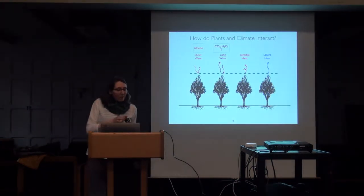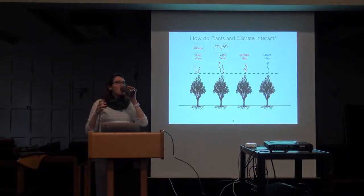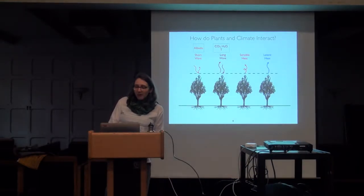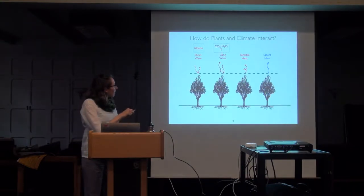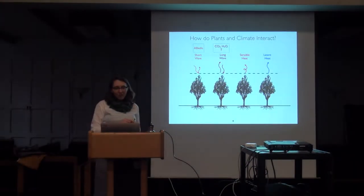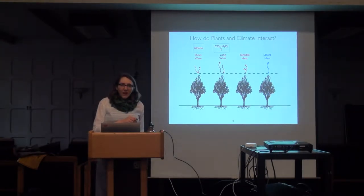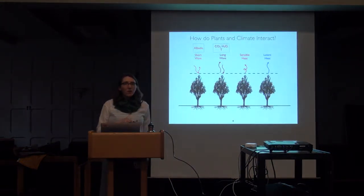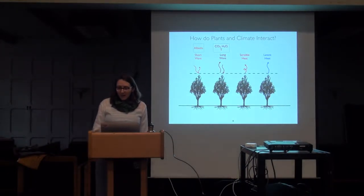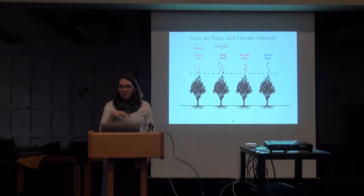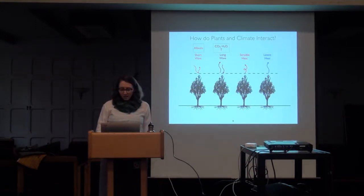Plants can also influence longwave energy fluxes — radiation in the infrared wavelengths that Earth emits back to space. The upward arrow represents Earth's re-emission; the downward arrow is atmospheric emission toward the land surface. Longwave fluxes are modified by carbon dioxide, water vapor, temperature profile, and clouds — things plants can more indirectly modify by participating in setting those atmospheric profiles. The upward flux is a function of surface temperature.